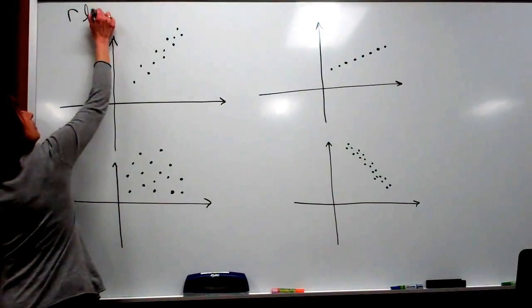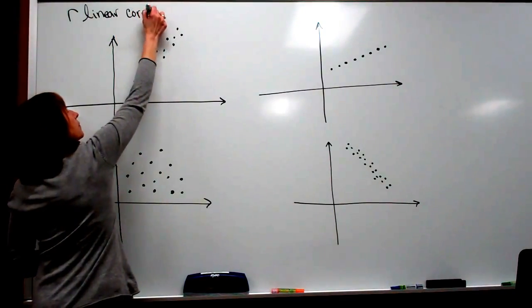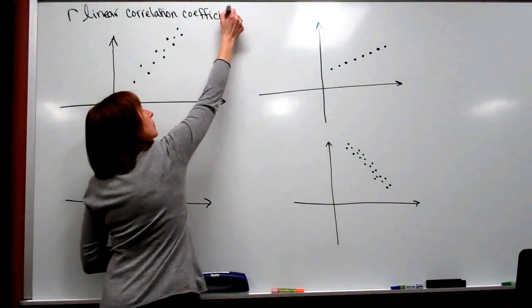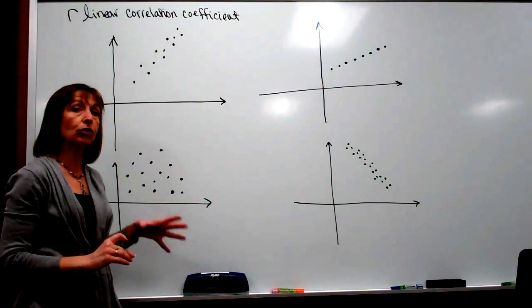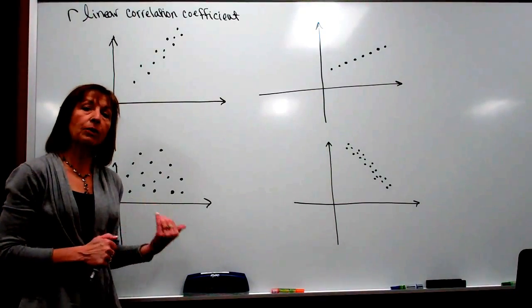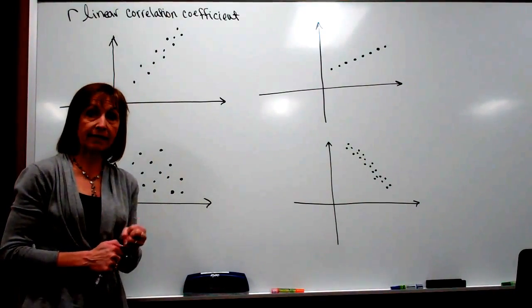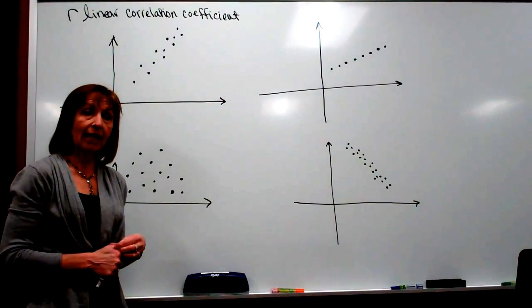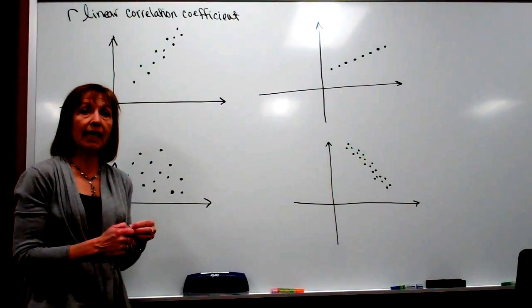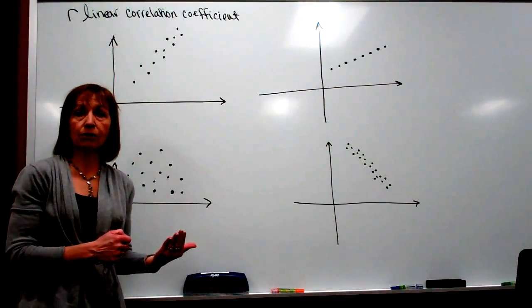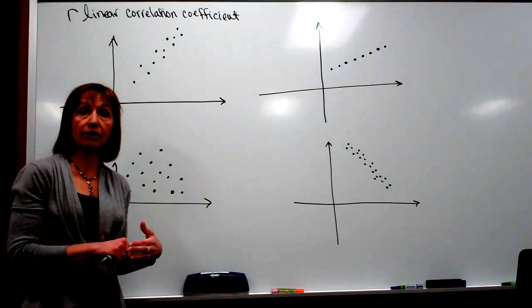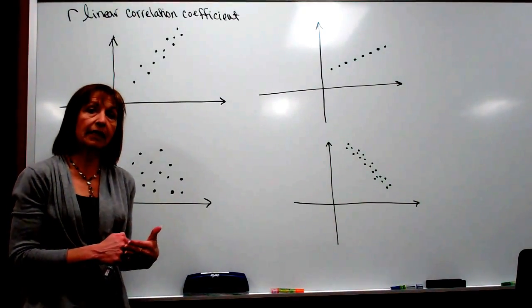The linear correlation coefficient r is a measure of how good our linear correlation is between the variables. When we're talking about a measurement taken from the sample, we're talking about a statistic. So when we sample our data values and use that to calculate our linear correlation coefficient, we're looking at the sample statistic, and we use English letters to denote those. So r is the linear correlation coefficient we get when calculating it using sample information.